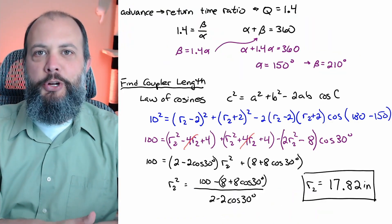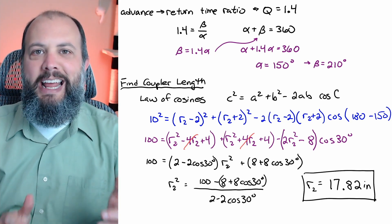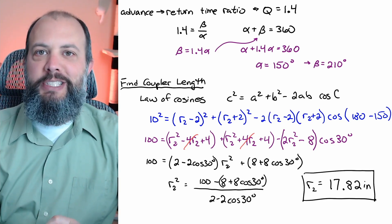If you want to look in detail about all of this algebra you may want to pause the video for a minute, but this single law of cosines gets me to an answer of 17.8 inches for the coupler length, leaving just one more piece to find the offset distance y.